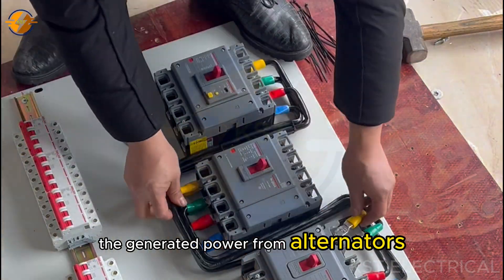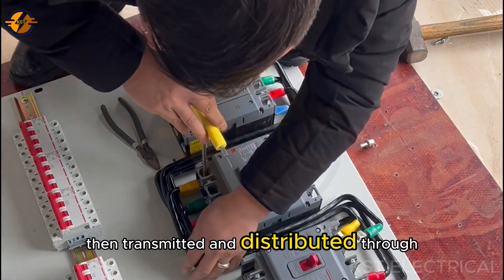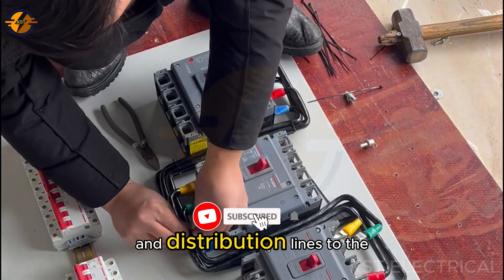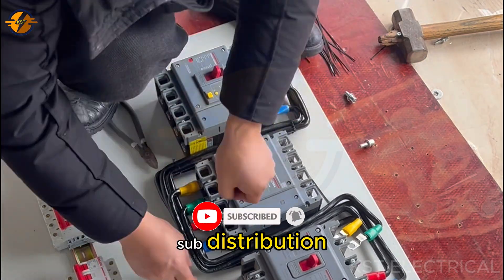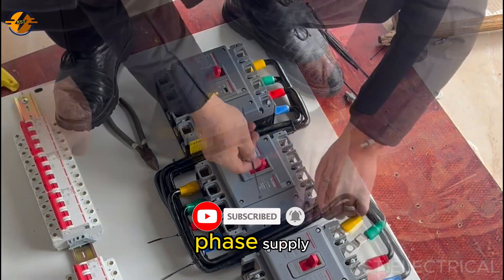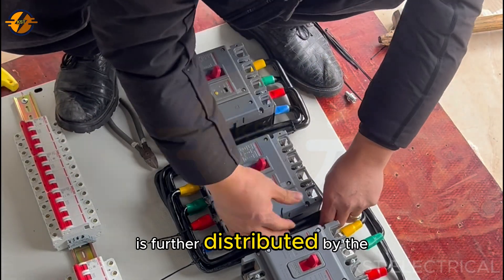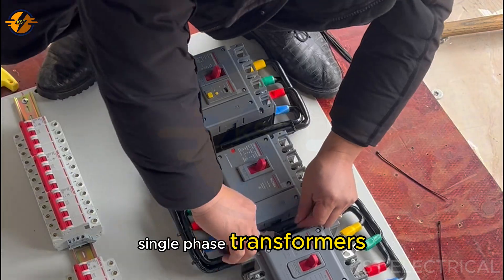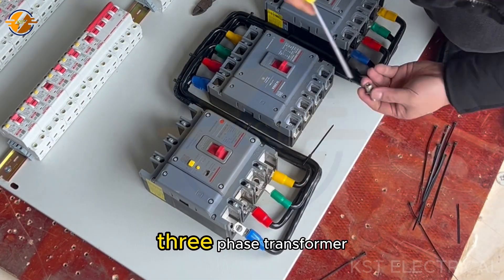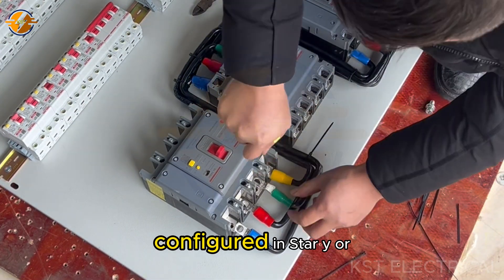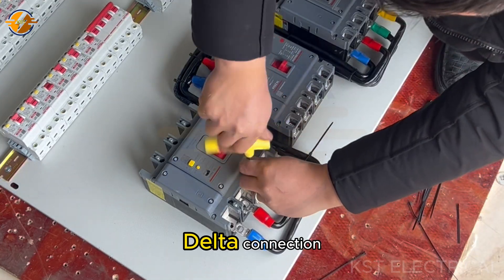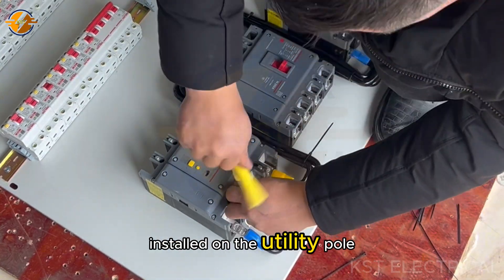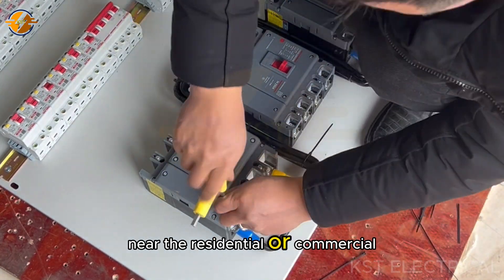The generated power from alternators is then transmitted and distributed through transmission and distribution lines to sub-distribution. Both single-phase and three-phase supply is further distributed by three single-phase transformers or a single unit of three-phase transformer configured in star Y or delta connection installed on utility poles near residential or commercial areas.